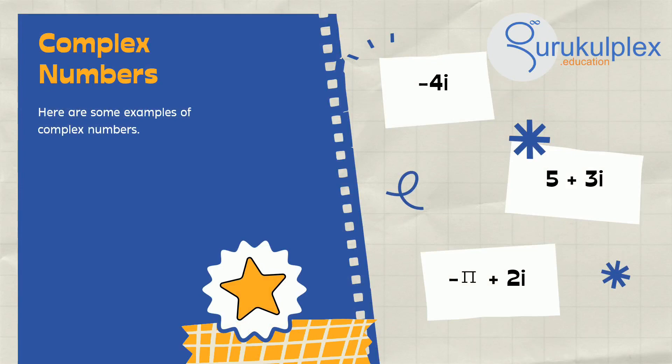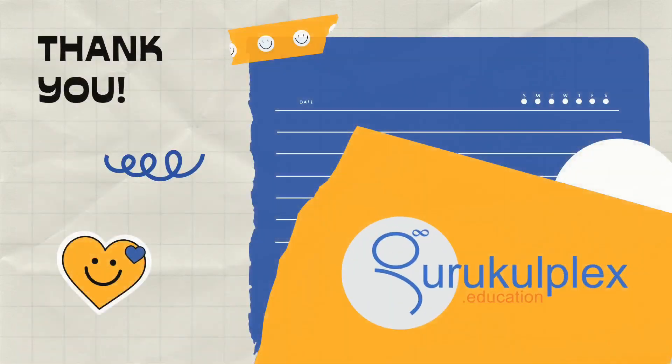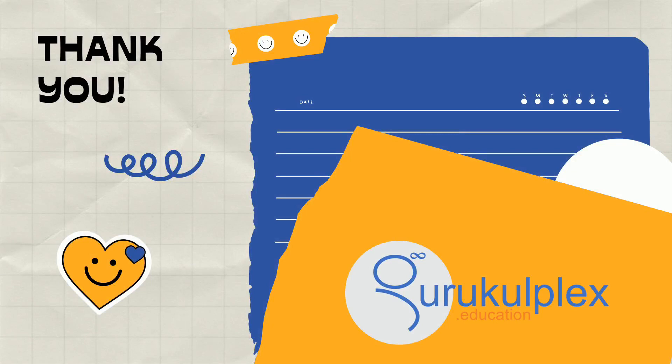The horizontal axis represents the real part of the number, while the vertical axis signifies the imaginary part.